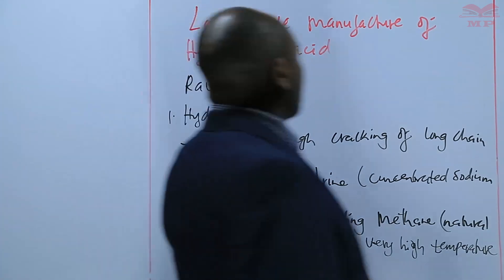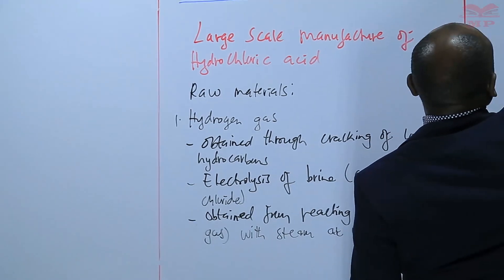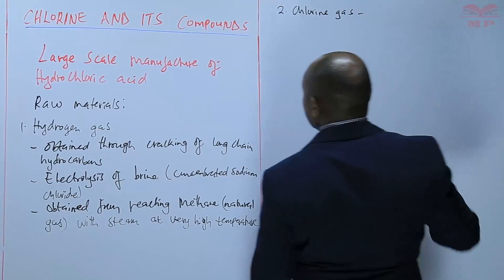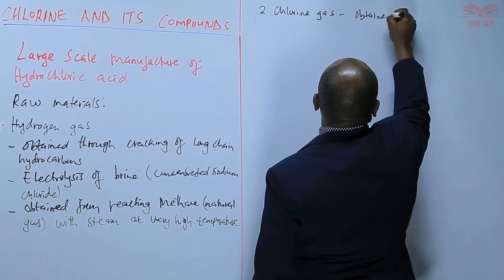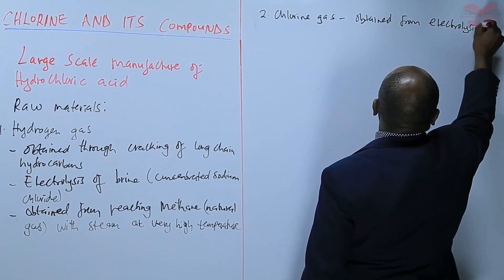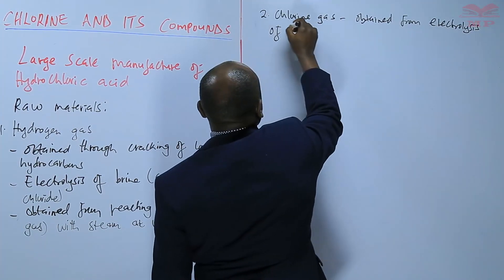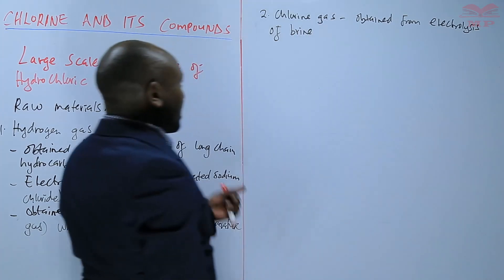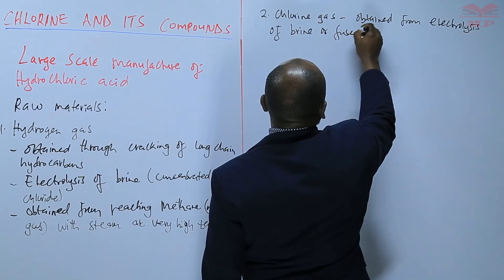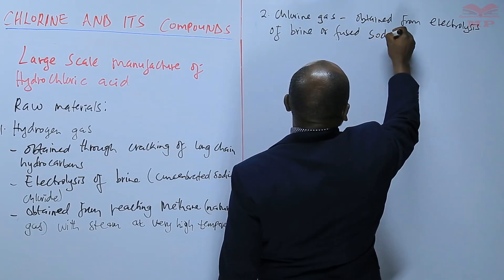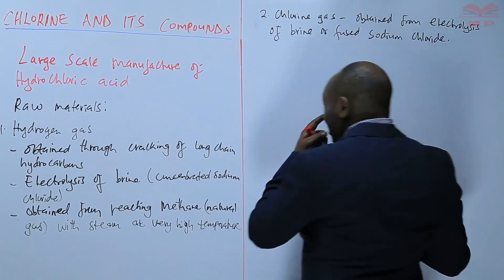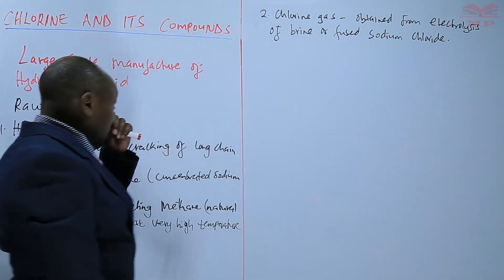The other raw material is chlorine gas, and this chlorine gas is obtained from electrolysis of brine, just like hydrogen. It's the other product of electrolysis of fused sodium chloride. So that's another way in which we can obtain chlorine. So those are the two raw materials.